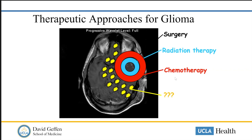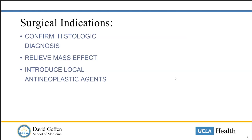Surgical indications for these tumors, even knowing they're a diffuse disease, are clear. Number one, we use surgery to confirm histologic diagnosis — we need extensive tissue sampling to perform comprehensive molecular analyses like genomic sequencing to understand potential molecular targets and match them with follow-up treatments. Not going to understand how to use further treatments without histology.